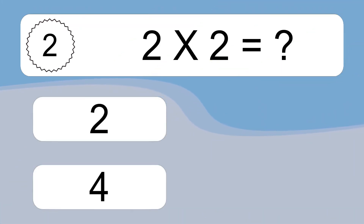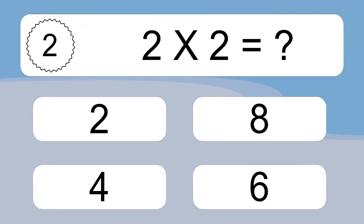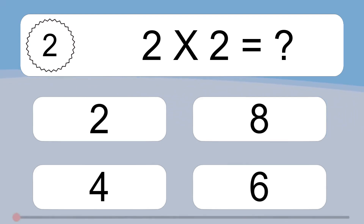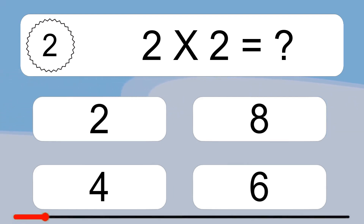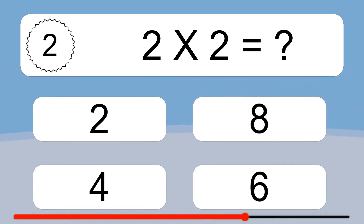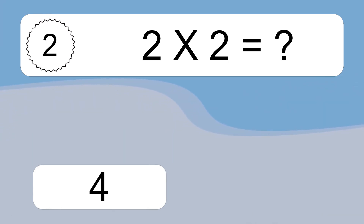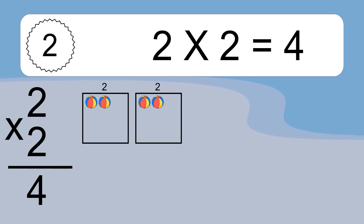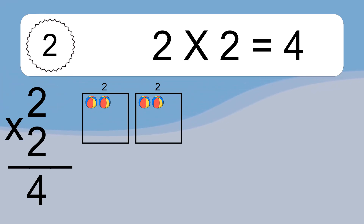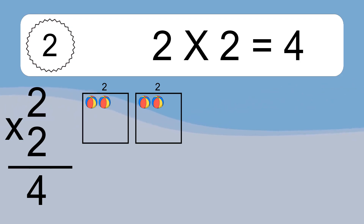2 times 2 equals what? 2 times 2 equals 4. We have 2 boxes, and each box has 2 colorful balls inside. If you count all the balls in all the boxes together, you will have 2 times 2 balls. This equals 4 balls.